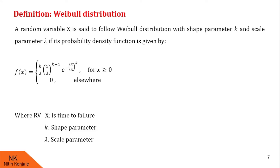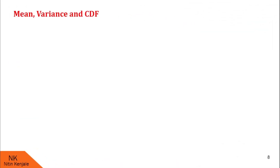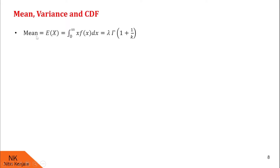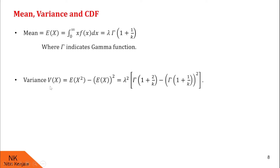Next we will see mean, variance, and CDF of Weibull distribution. The mean of random variable x, denoted by E(x), is the integral of x times f(x) dx over the limit 0 to infinity. Substituting f(x) and evaluating, we find the mean is lambda times gamma(1 + 1/k), where gamma denotes the gamma function. The variance of x, denoted V(x), equals E(x²) minus [E(x)]², which evaluates to lambda² times [gamma(1 + 2/k) minus gamma(1 + 1/k)²].